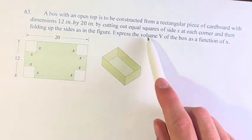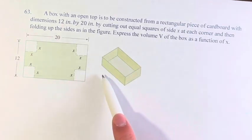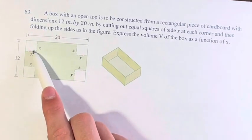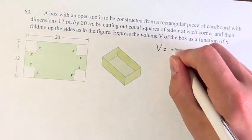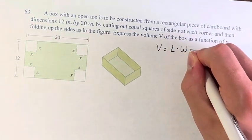We're asked to express the volume V of the box as a function of x, this little piece that's being cut out. So the volume of the box is equal to its length times its width times its height.